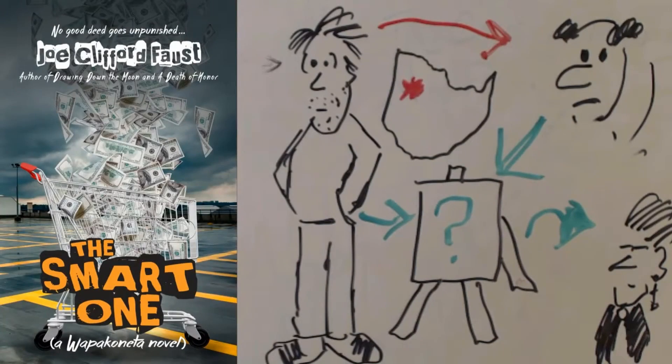The novel is called The Smart One, and it's written by me, Joe Clifford Faust. Thanks for watching.